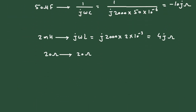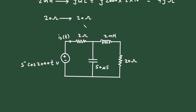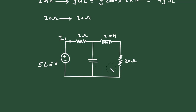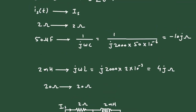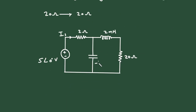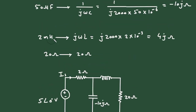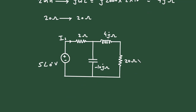Now we can redraw the circuit with phasor domain values. The source becomes 5∠0° volts, IS is capital IS, the 2 ohm stays as 2 ohms, the capacitor becomes −10j ohms, the inductor becomes 4j ohms, and the 20 ohm remains 20 ohms.